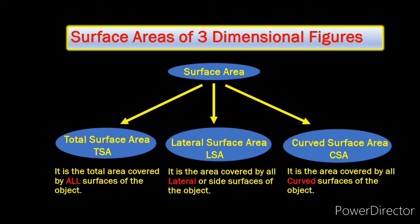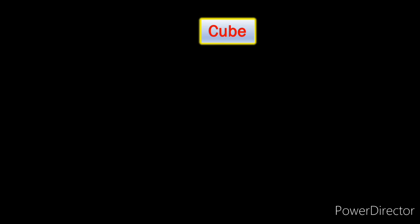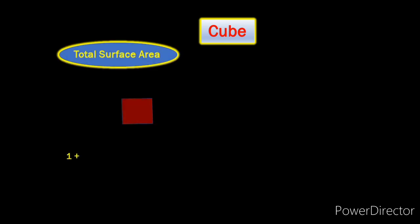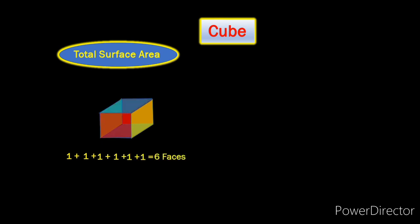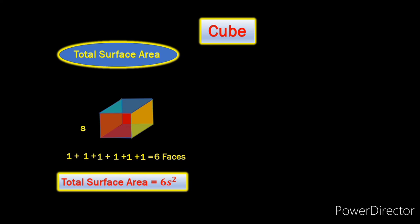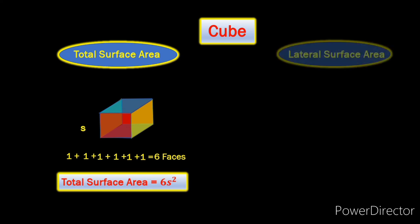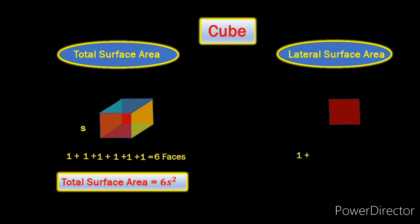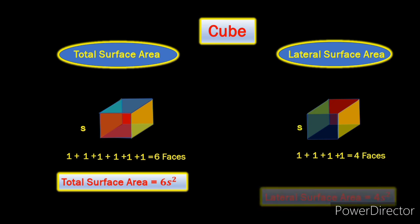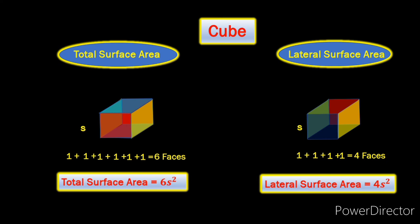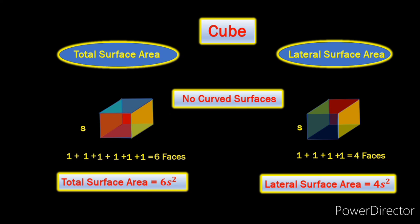Now let's understand these three terms much better using some well-known 3D objects. Here is a cube. Its total surface area will be the addition of the areas of each of the six faces of the cube. So if I consider the side of the cube to be s, the area of each face will be s² and that's why its total surface area will be 6s². The lateral surface area will only include the area of the four side faces of the cube, so the lateral surface area will be 4s². Now do we notice any curved surfaces in a cube? No — that's why there is no logic in finding out the curved surface area.